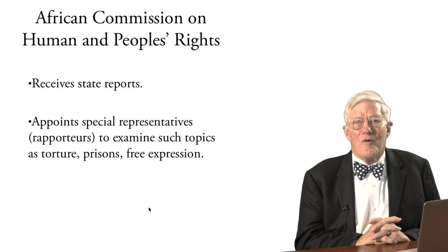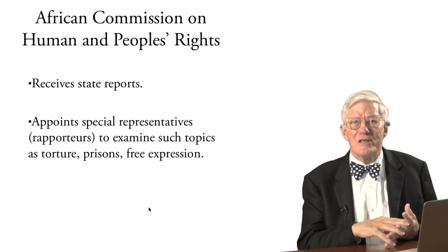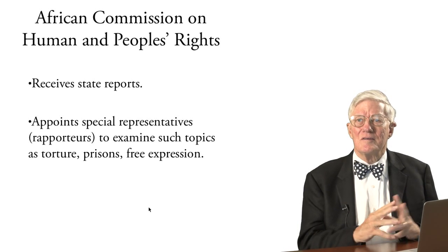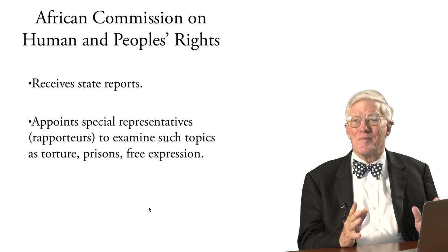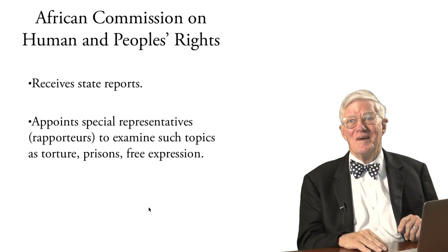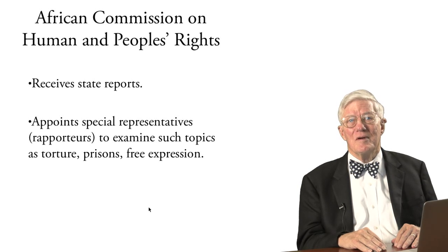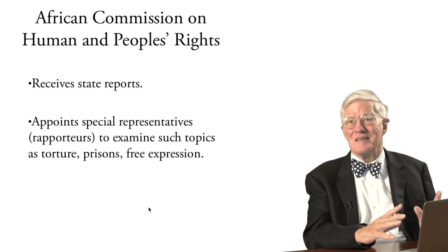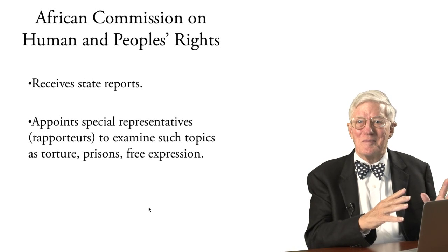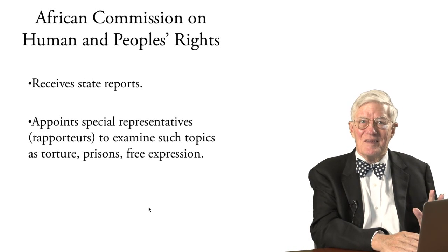Before the African Court of Human Rights was set up, we have the African Commission on Human and People's Rights, which has done quite a lot of work. It receives state reports — that is, self-reporting from nations about their human rights performance. The African Commission has been quite active in using special representatives, or rapporteurs, to examine topics like torture, prisons, and free expression. This process of using rapporteurs is common to all three systems — Europe, the Americas, and Africa — and frequently good things have come out of this type of review.